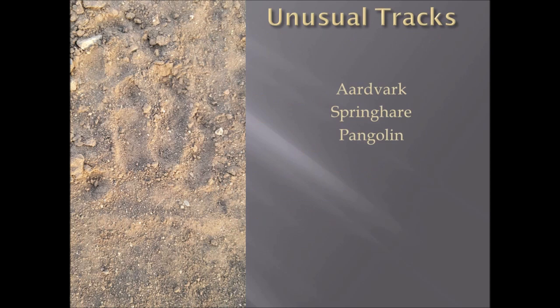Unusual tracks include aardvark, spring hare, and pangolin. They tend to have three toes in the track, though they don't always show all their toes depending on the situation. Here on the left you have an aardvark track showing three large toes with large blunt claws, and two smaller toe imprints on either side of the three big toes.